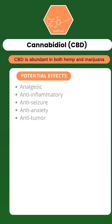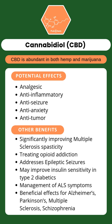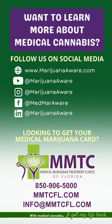Why do we use CBD? It's an analgesic, anti-inflammatory, anti-seizure, anti-anxiety, and anti-tumor product. It also helps to treat opioid addiction, addresses epileptic seizures, may help improve insulin sensitivity and type 2 diabetes, helps to manage ALS symptoms, and is also beneficial in managing the effects of Alzheimer's, multiple sclerosis, and schizophrenia.